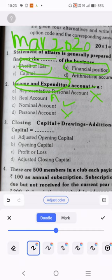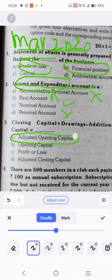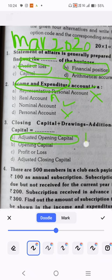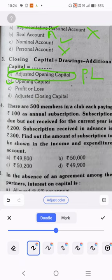Closing capital plus drawings minus additional capital. What do you think about closing capital? In closing capital, you will need to reduce the additional capital, then reduce the opening capital. That is called adjusted opening capital. If you need to adjust profit or loss, you will get adjusted closing capital. That is the first question.